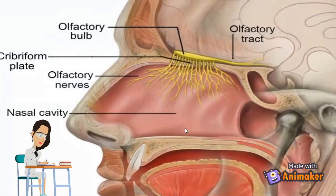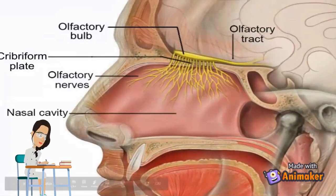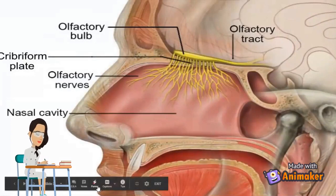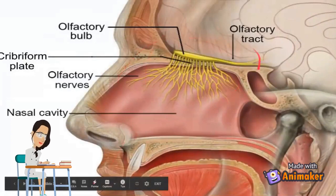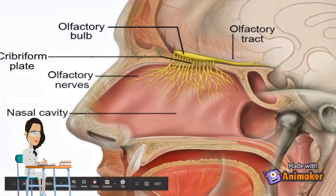Here is your nasal cavity. These are your nose hairs, which help trap the dust. And these are your olfactory nerves, which let your brain know what you're smelling.